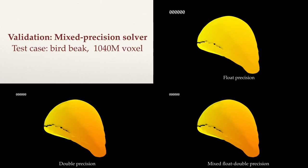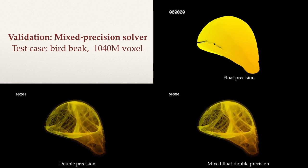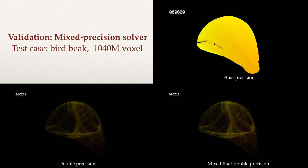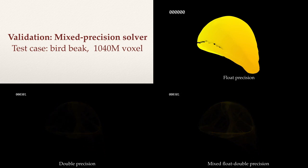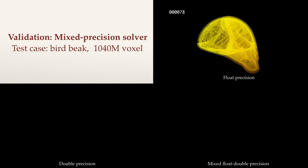To validate the mixed precision scheme, we compared the residuals from different precision schemes. We compared the residual evolution of the double precision scheme and our mixed precision scheme on the bird beak example. Quantitatively, the residual reduction of the proposed mixed precision scheme is similar to the double precision scheme. Using only float precision, the solver converges more slowly due to numerical drift.